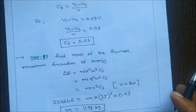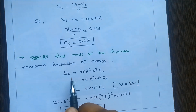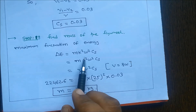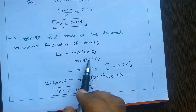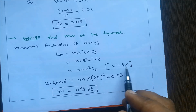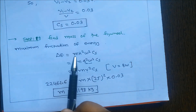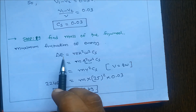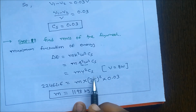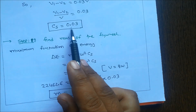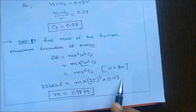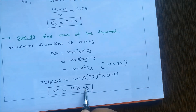Step 9: Find mass of the flywheel. Maximum fluctuation of energy ΔE = m·k²·ω²·cs. Replacing k with r and using v = r·ω gives ΔE = m·v²·cs. So m = ΔE / (v²·cs) = 22462.6 / (25² × 0.03) = 1198 kg.